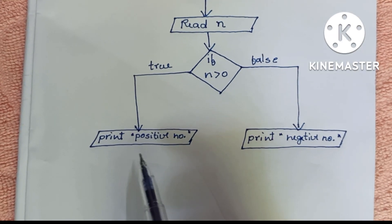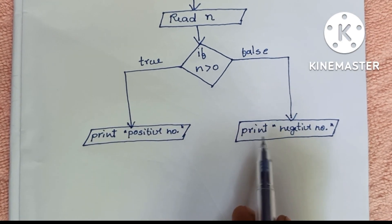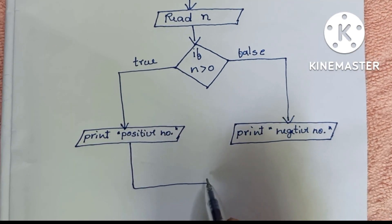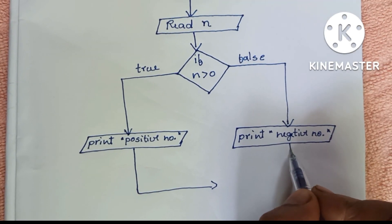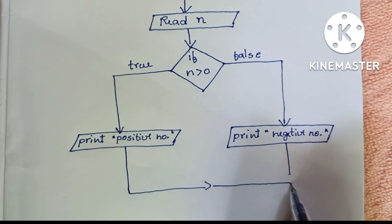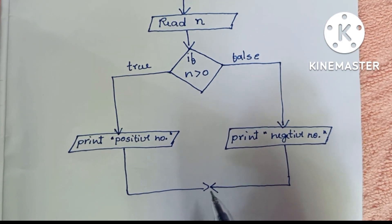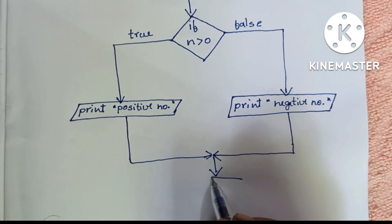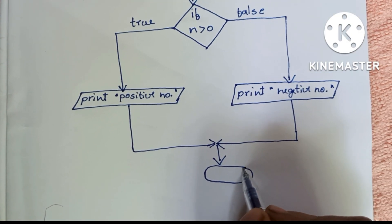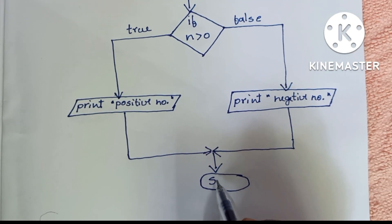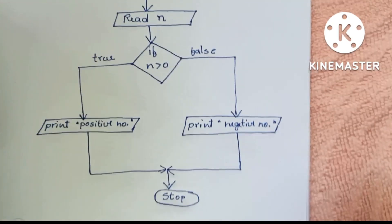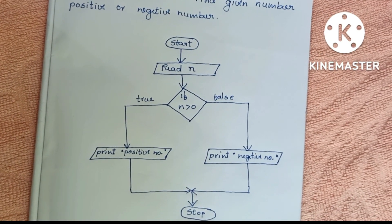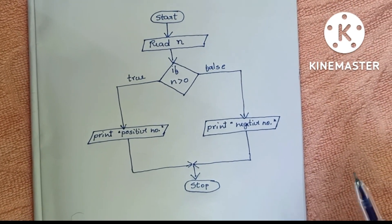Next, we have to combine this output with the stop statement to stop the flowchart. So we connect both output statements to the stop statement. The stop statement is always written within an oval shape, so we draw an oval and write the stop statement. This completes the flowchart to find whether a given number is positive or negative.